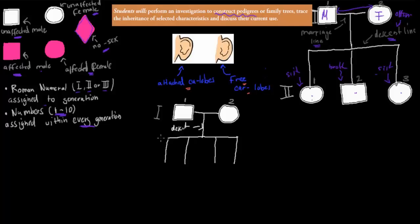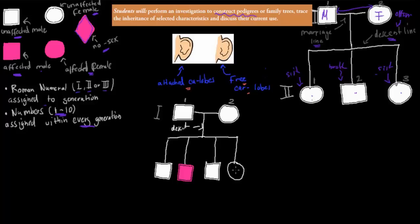My oldest brother is unaffected — he has free earlobes, so he gets a white symbol. I actually have attached earlobes, so I am affected. My younger brother has free earlobes, and my younger sister also has free earlobes. So in generation two, the only one affected by attached earlobes is me. We assign Roman numeral II, and within that generation my oldest brother is number 1, I'm number 2 — the second oldest — then number 3 and number 4.